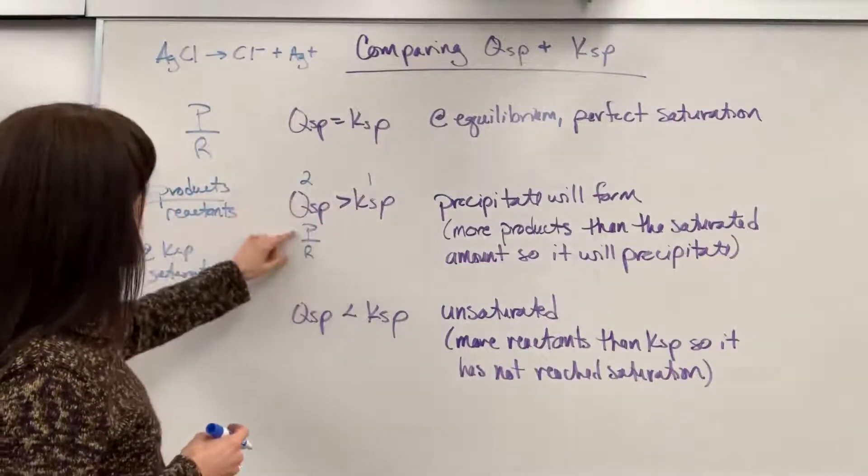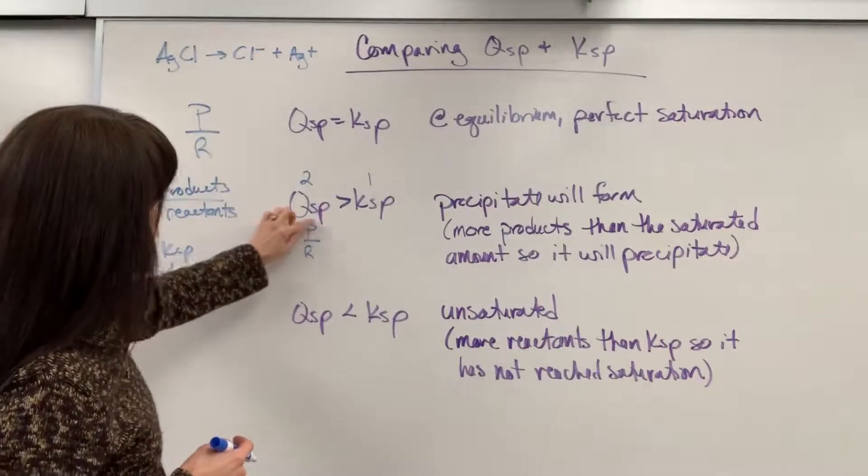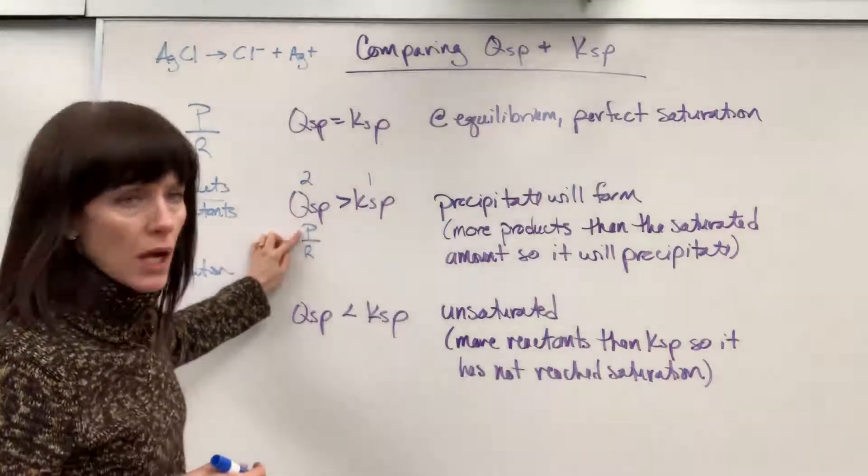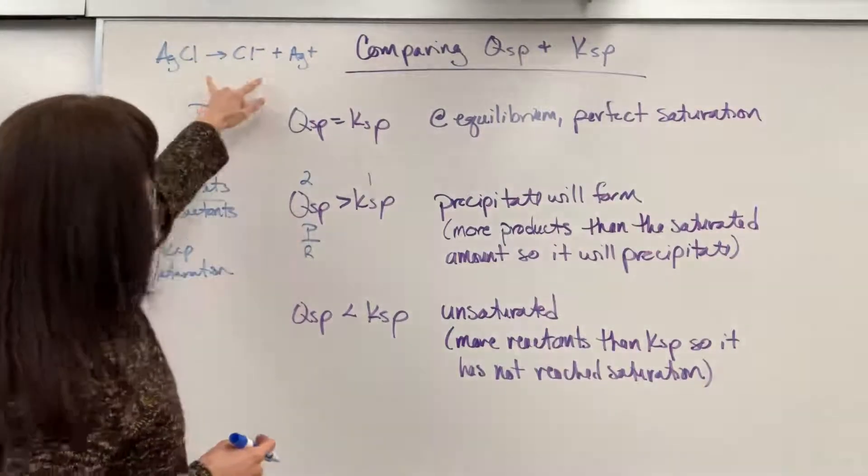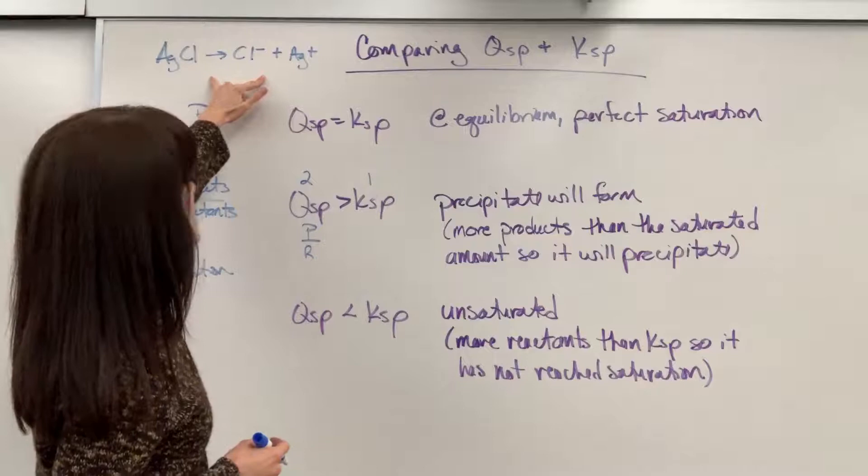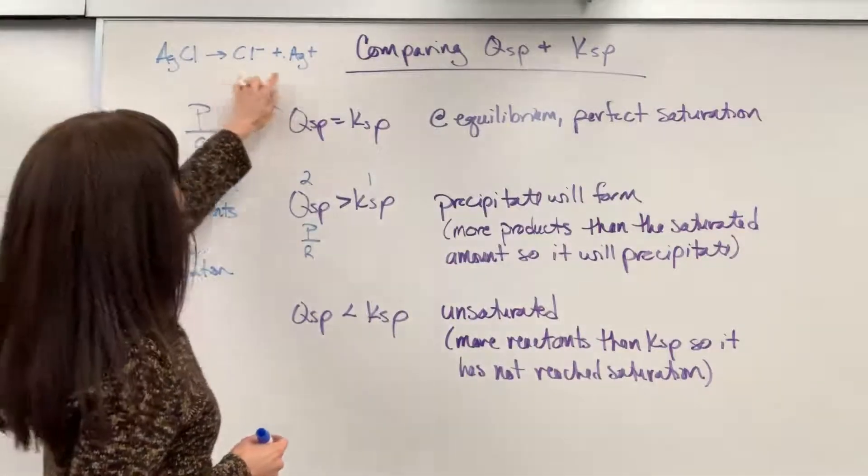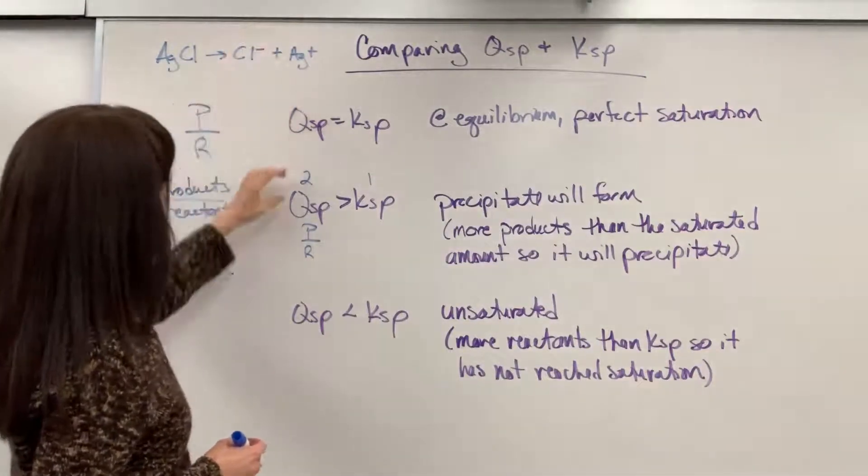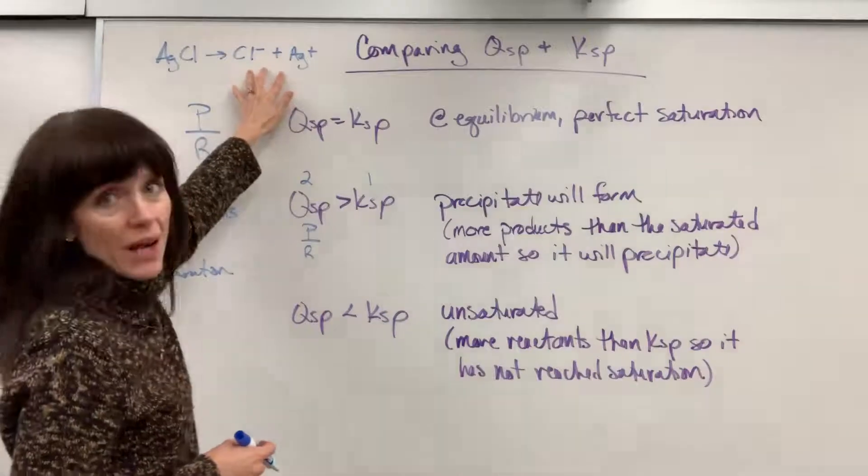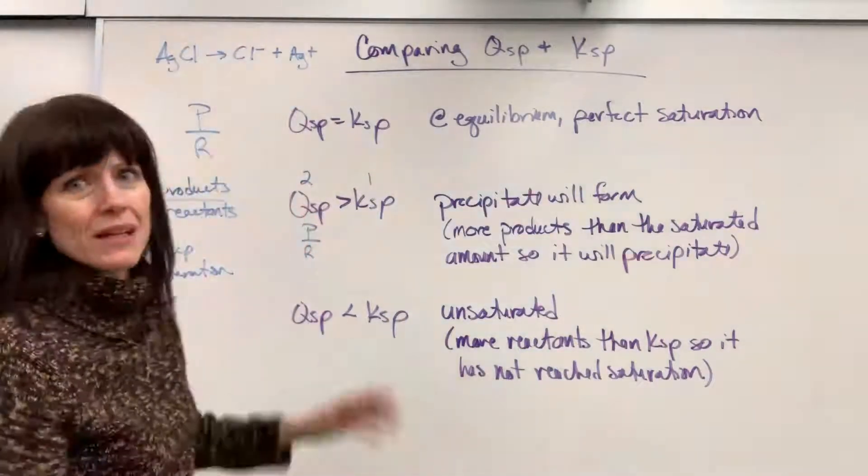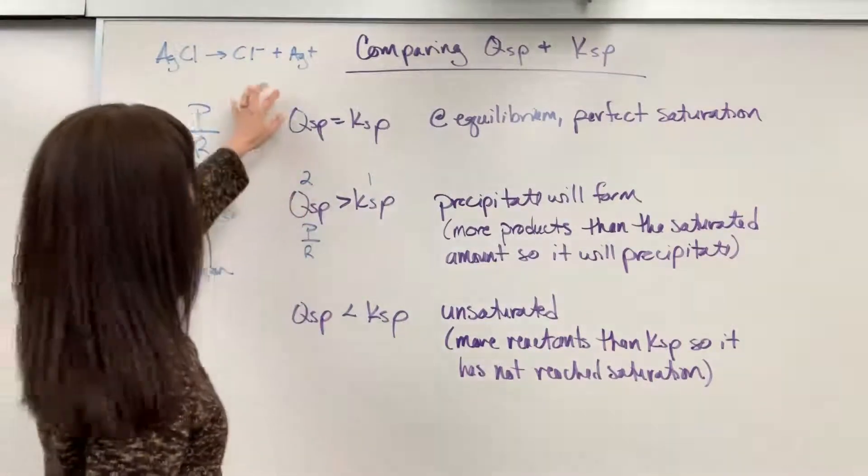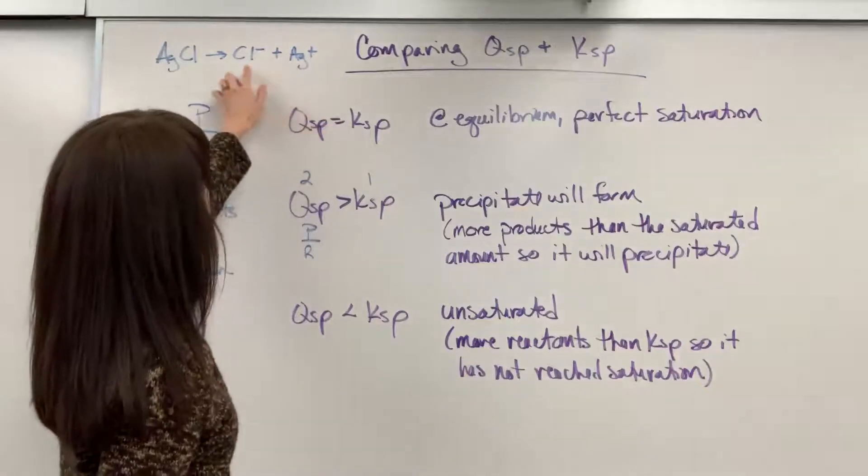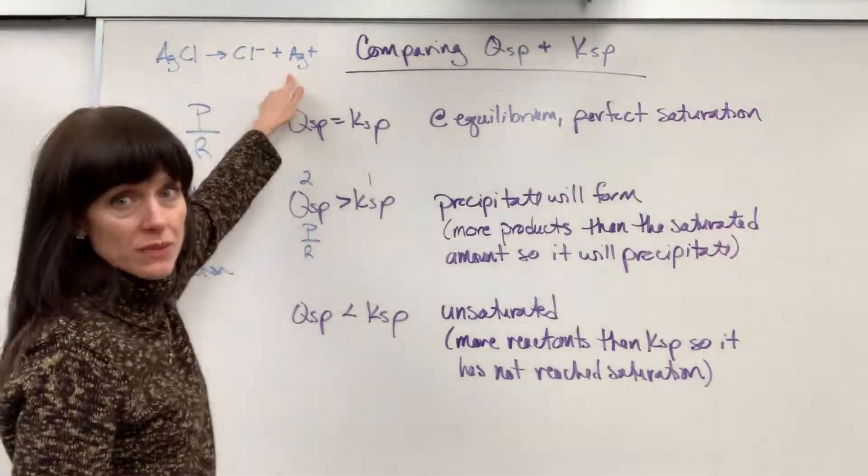So if this number is bigger, looking at that ratio, I must have a bigger numerator. I must have more products. So then I go back to this idea of the reaction. If I have more products right here at this moment, it means I'd have more ions. But then I go, wait, I can't have more ions than KSP because that's the maximum amount that will dissolve.